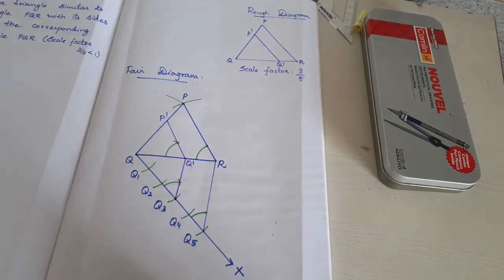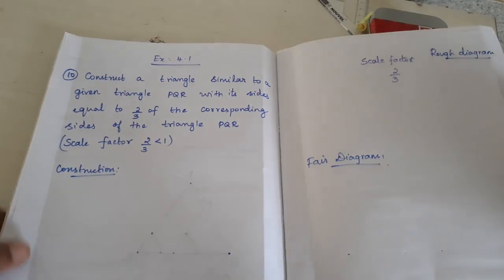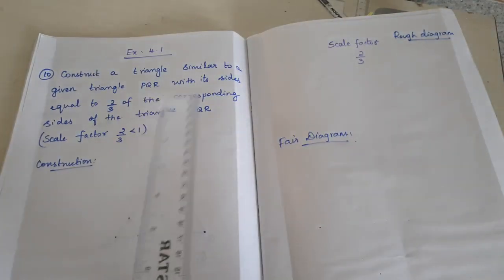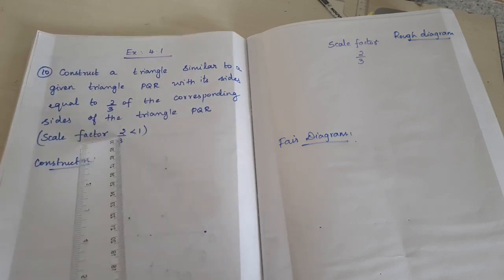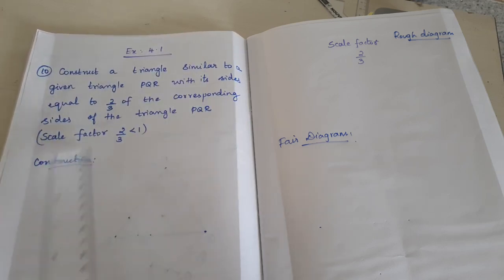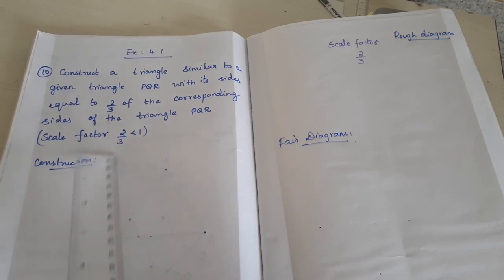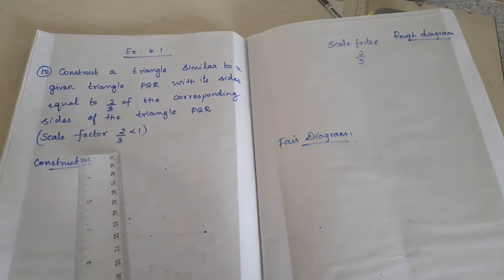Now, Exercise 4.1, tenth problem. Construct a triangle similar to the given triangle PQR with its sides equal to 2 by 3 of the corresponding sides of triangle PQR. The scale factor is 2 by 3, which is less than 1 — a proper fraction. So P dash Q dash comes inside the triangle.